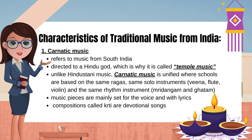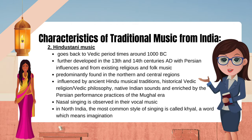Compositions called krati are devotional songs. 2. Hindustani music goes back to Vedic period times, around 1000 B.C., and was further developed in the 13th and 14th centuries A.D. with Persian influences and from existing religious and folk music. Predominantly found in the northern and central regions, influenced by ancient Hindu musical traditions, Vedic religion and philosophy, native Indian sounds, and enriched by the Persian performance practices of the Mughal era. Nasal singing is observed in their vocal music. In North India, the most common style of singing is called khyal, a word which means imagination.